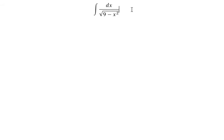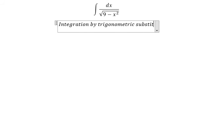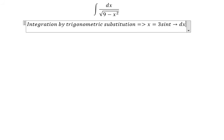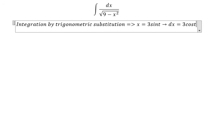We need to use integration by trigonometric substitution. So we set x equal to 3 sine t, and dx equal to 3 cosine t dt.